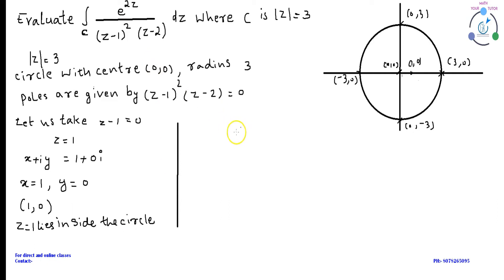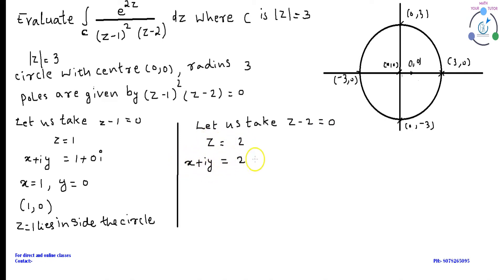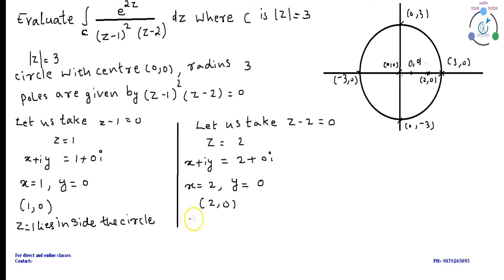Now equate Z minus 2 equal to 0. Then Z equal to 2. We know that Z equal to x plus iy, which is equal to 2 plus 0i. Comparing real and imaginary parts on both sides, we get x equal to 2 and y equal to 0. This gives the coordinate (2, 0). Since (2, 0) lies inside the circle, the pole Z equal to 2 lies inside the circle mod Z equal to 3.